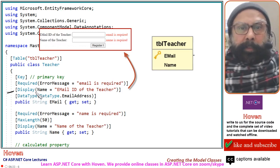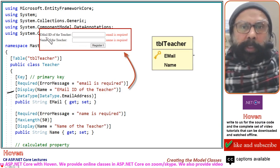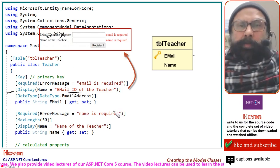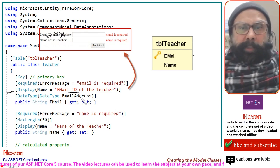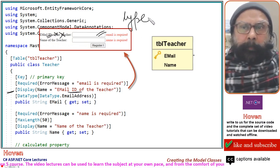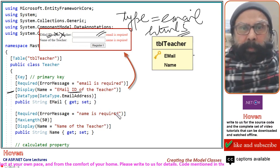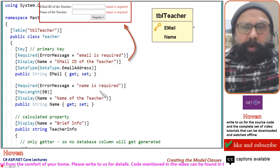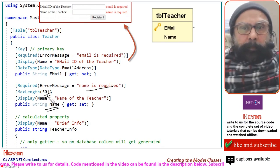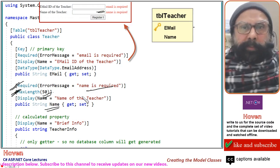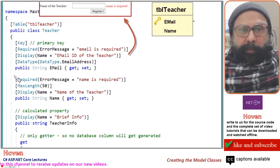The [Display] annotation provides the label — 'Email ID of the Teacher' — which you will see on the Razor page. The [DataType(DataType.EmailAddress)] annotation sets the input type to email. Similarly, for the Name property, [Required] enforces validation, [MaxLength(50)] sets the maximum length to 50 characters for both HTML5 and server-side validation, and [Display] provides the associated label.